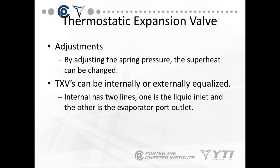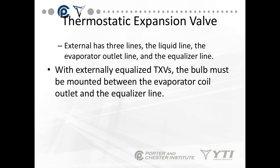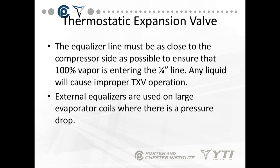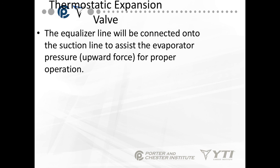Internal equalization has two lines: the liquid inlet and the evaporator port outlet. External equalization has three lines: the liquid line, the evaporator outlet, and the equalizer line. With externally equalized TXVs, the bulb must be mounted between the evaporator coil and the equalizer line — not on the compressor side. If you put it after the equalizer line, you will not get correct temperatures. The equalizer line must be as close as possible to the compressor side to ensure 100% vapor is entering the quarter-inch line. Any liquid coming back through the external equalizer will cause improper TXV operation. External equalizers are used on large evaporator coils where there is a pressure drop, and the equalizer line is connected to the suction line to assist the evaporator pressure for proper operation.